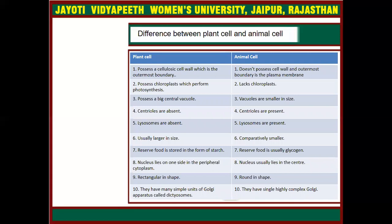Now we discuss about the differences between plant cells and animal cells. The plant cell has a cell wall, but animal cells do not have any cell wall. The plant cell has chloroplast for photosynthesis, but animal cells do not have chloroplast.